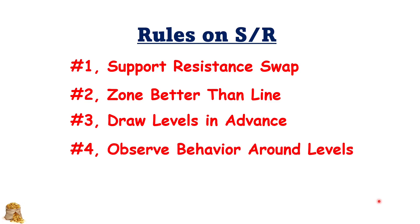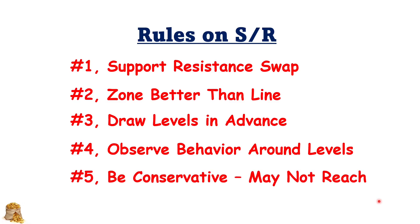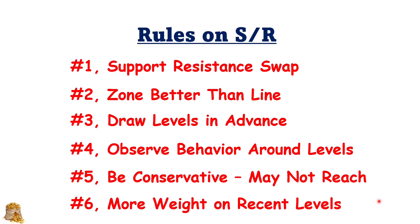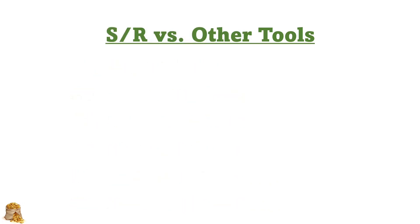Number four, we need to observe the behavior around the levels because when the market goes to a level, it can reverse or it could penetrate. Number five, be conservative when we trade support and resistance because occasionally the support and resistance might not be reached. Number six, we need to put more weight on the most recent levels rather than the levels from a while ago.